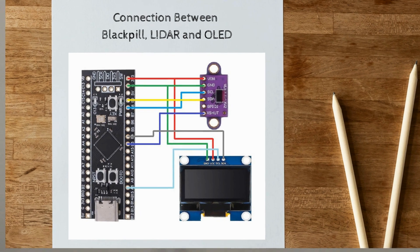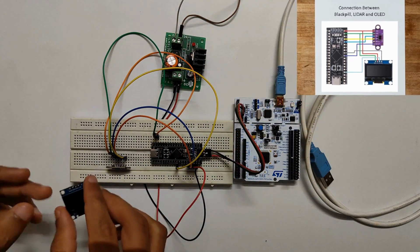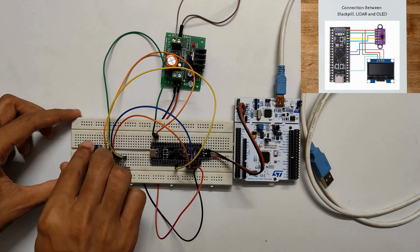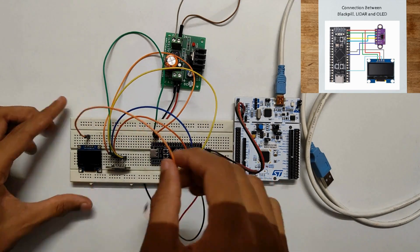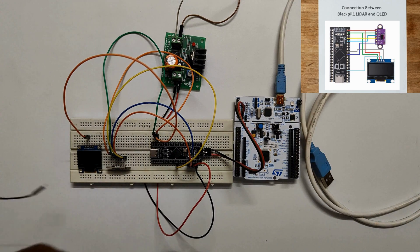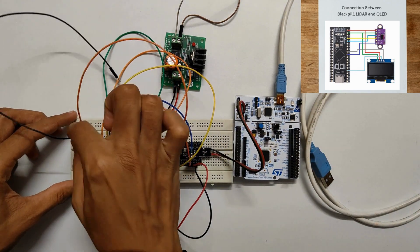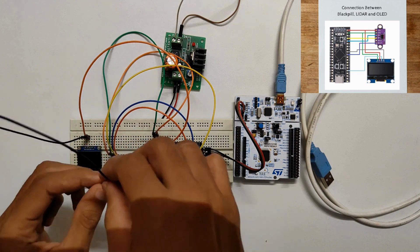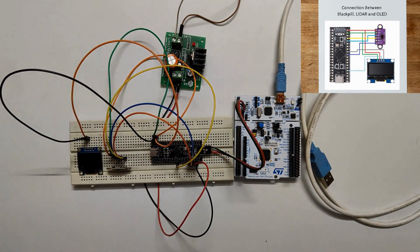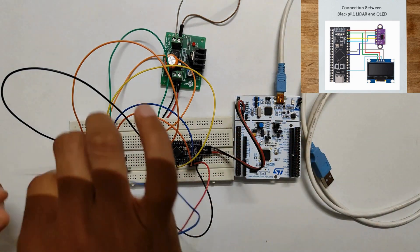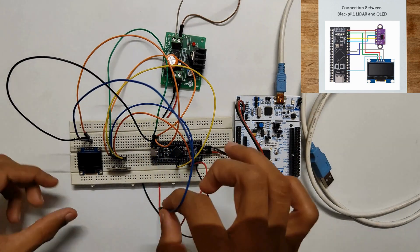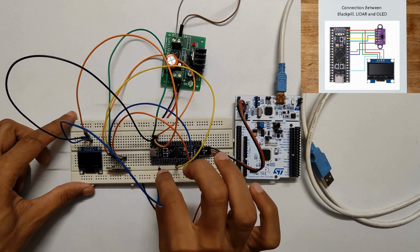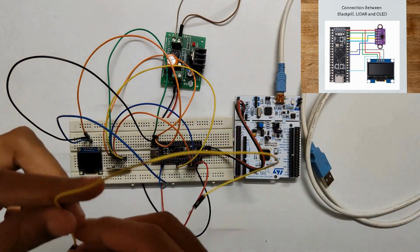We have already connected the black pill and the LIDAR. Now let's connect the OLED. Connect VCC to 3.3V, ground to ground, SCL to PA8, and SDA to PB4.